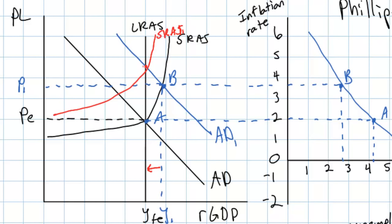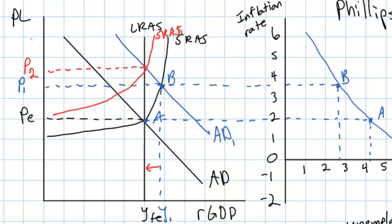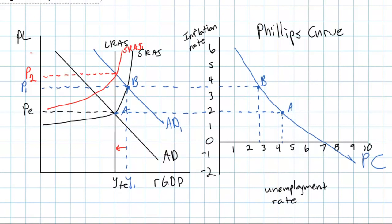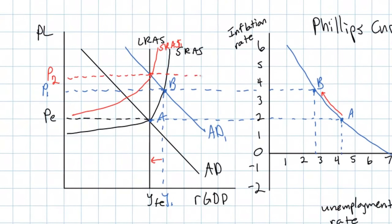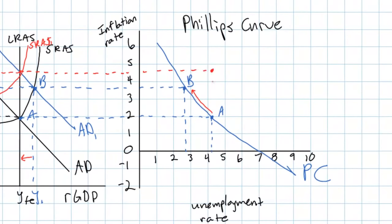This economy in the long run will always return to its full employment level of output. However, in the long run inflation will accelerate, resulting in a new higher price level of P2. On the Phillips curve diagram, when aggregate demand initially increased we moved from point A to point B, but in the long run unemployment returns to its natural rate of just over four percent while inflation accelerates due to cost-push inflation from higher nominal wages.